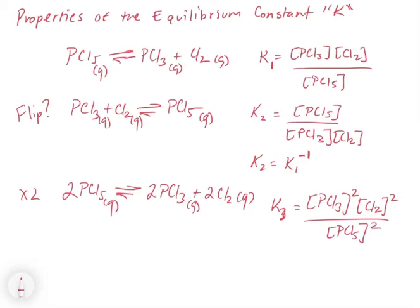And so what you notice is that this is the same thing as K1 except all of the terms are squared. So if we wanted to get a value for K3, we could take K1 and we can square it, and that will give us a value for what this would be if we had multiplied it by two. So whenever you multiply by a factor, you can take the K from the reference expression and raise it to whatever power you're multiplying it by.